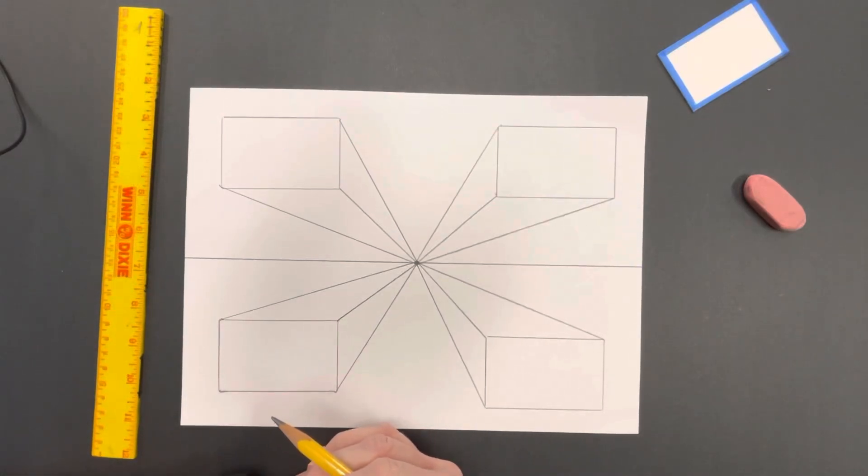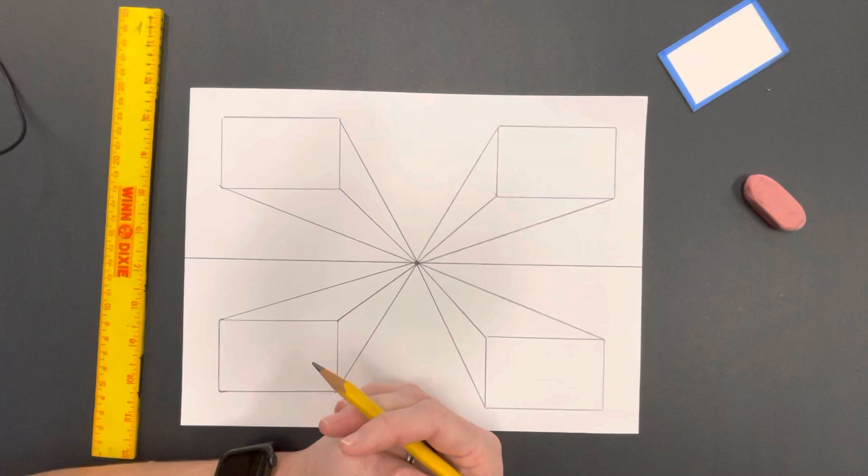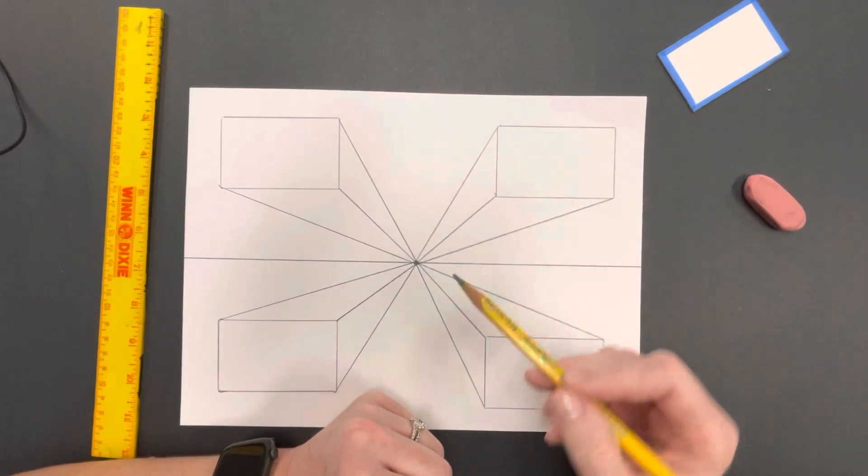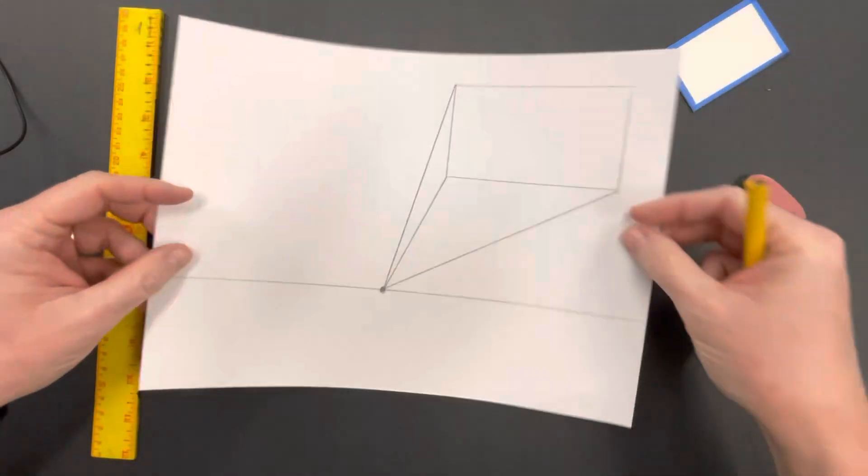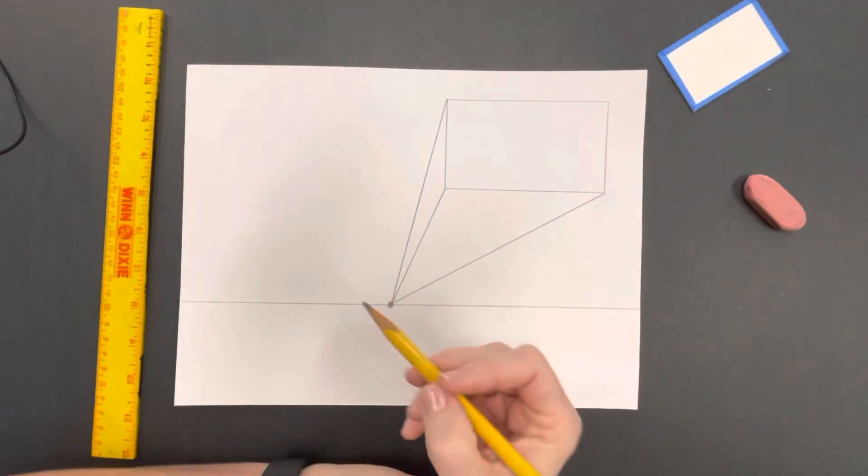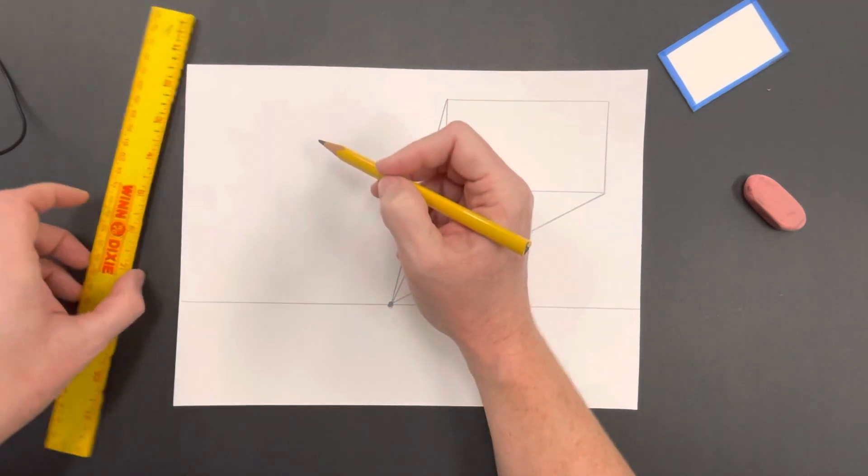To close this off and make it look like cubes, you have to pick a place for your box or cube to stop. I drew a bigger one on the back to show you what you're essentially going to be doing - figuring out where you want it to stop and you are going to be doing a 90-degree angle.